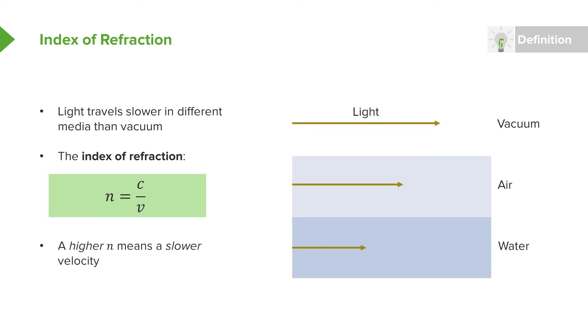for a higher n, for a higher index of refraction, we mean that the speed of light is slower in that medium. So a more dense medium like water would have a higher index of refraction and a lower speed for light to travel through that medium.